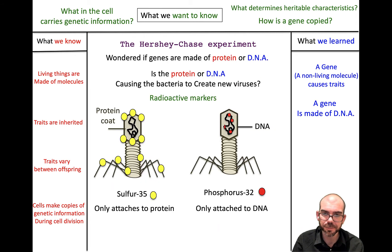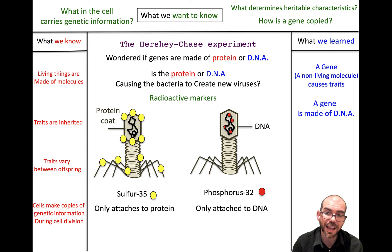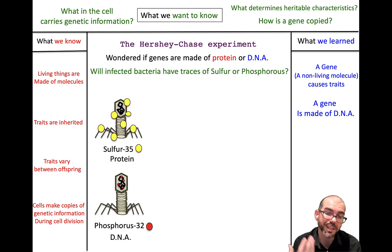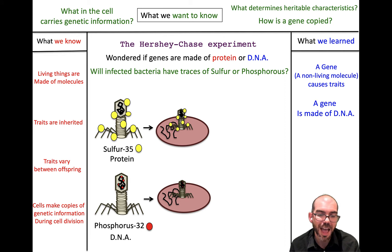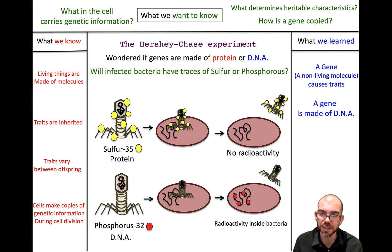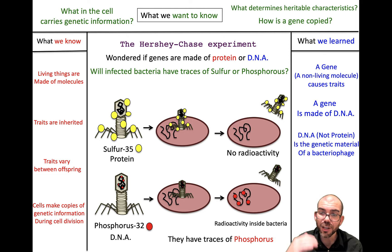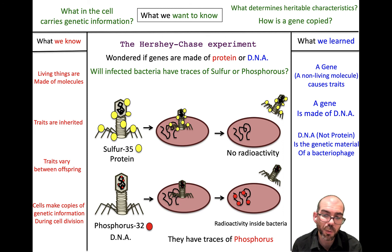To test this, they used radioactive isotopes: sulfur-35, which attaches only to protein, and phosphorus-32, which attaches only to DNA. With two batches of bacteriophages — one labeled with sulfur on the protein and one with phosphorus on the DNA — they could track what entered the bacteria. After infecting bacteria with each group, they found none of the sulfur inside the bacteria but did find phosphorus-32 inside. This conclusively proved it has to be DNA — the only way to explain why phosphorus was inside and sulfur was not.